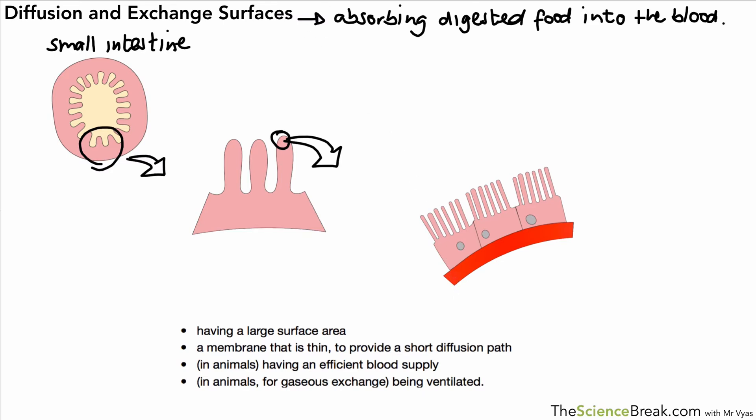So how does the small intestine make sure that it's able to absorb as much as possible from digested food? Well we can go back to our list. It has a large surface area, those finger-like projections poking in. It also has a thin membrane so each one of those cells, the membrane is very thin, so that means there's only a short diffusion path for the substances to get in the cell.